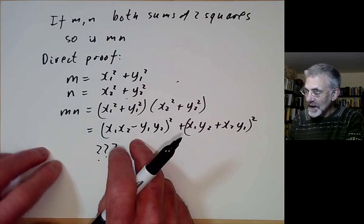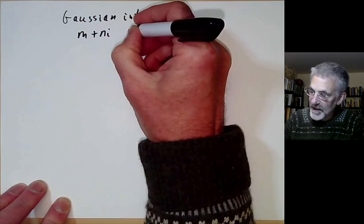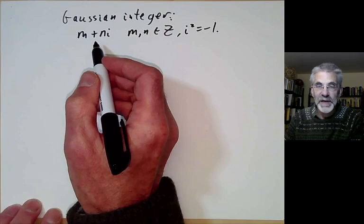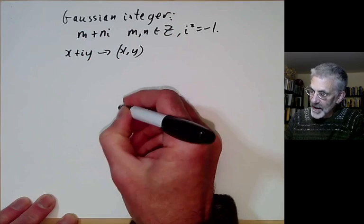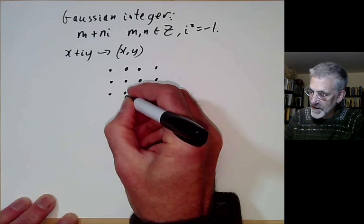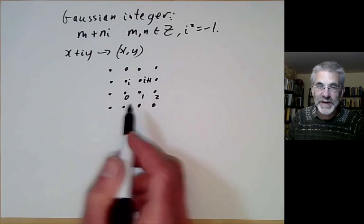A Gaussian integer is something of the form m+ni where m and n are integers and i²=−1 — these are complex numbers. The complex numbers can be identified with the plane by mapping x+iy to the point (x,y). The Gaussian integers then form a square lattice of all points with integer coordinates, with 0, 1, 2, i, 1+i, and so on. They look like the corners of a chessboard.